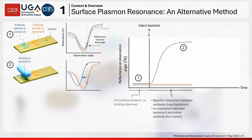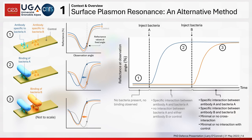If we introduce Bacterial Strain A and expose it to the sensor, Antibody A binds it, giving a shift in the plasmon resonance curve because we've changed the refractive index conditions just above the surface. By monitoring the reflectance of the region functionalized with that antibody, we see an increase in reflectivity due to mass uptake — binding of bacteria to the surface. Likewise, if a second bacterial strain B is injected, Antibody B binds to it and produces the same reflectance increase.